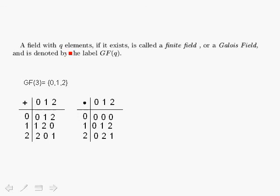A field with Q elements, if it exists, is called a finite field, as opposed to infinite fields. A field with a finite number of elements is called a Galois field, denoted GF(Q), where Q is the number of elements within the field. Let's take a simple example of the Galois field for three elements: the elements are 0, 1, and 2, and we'll define addition and multiplication on GF(3).